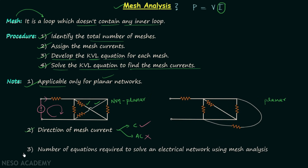According to the third point, the number of equations required to solve an electrical network using mesh analysis is equal to the number of meshes, M. The number of meshes is calculated as M equals B minus N plus 1, where B is the number of branches and N is the number of nodes. This formula gives you the number of meshes, which is the same as the number of KVL equations required to solve the network.